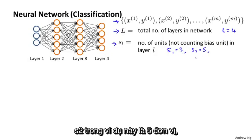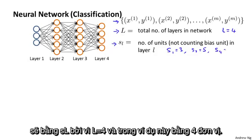s_2, in my example, has five units, and the output layer s_4, which is also equal to s_L, because capital L is equal to four. The output layer, in my example on the left, has four units.